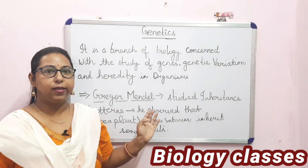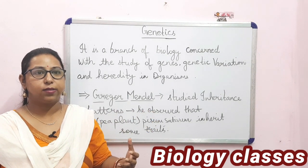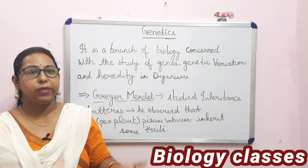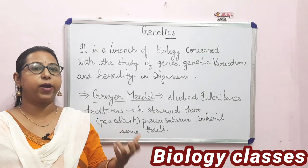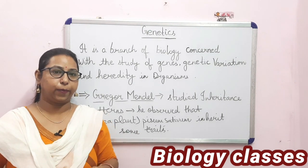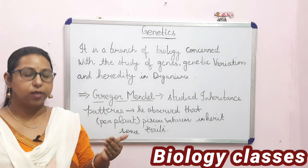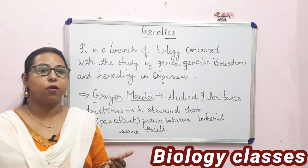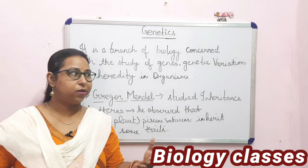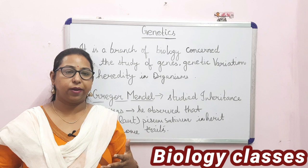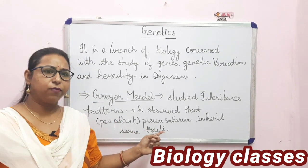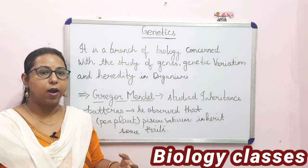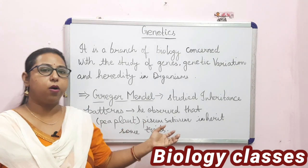Mendel studied that some traits are inherited in patterns of inheritance — basically, some characters or traits are passed down from parents to offspring. Gregor Mendel is still known as the father of modern genetics. He discovered the basic principles of heredity through experiments in his monastery garden, starting with the pea plant, whose scientific name is Pisum sativum, to observe contrasting characters passed on to the offspring.